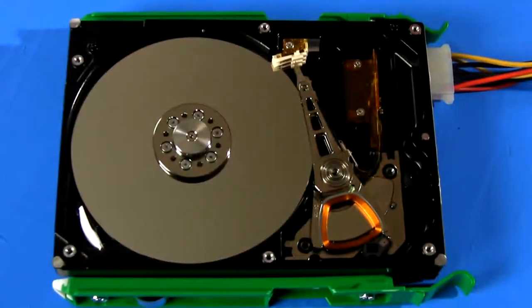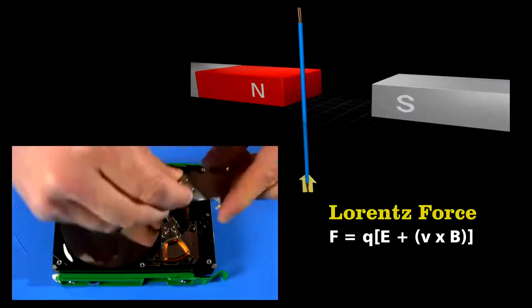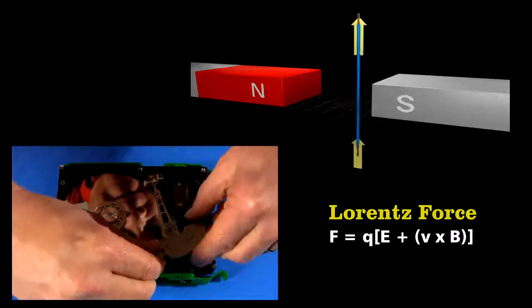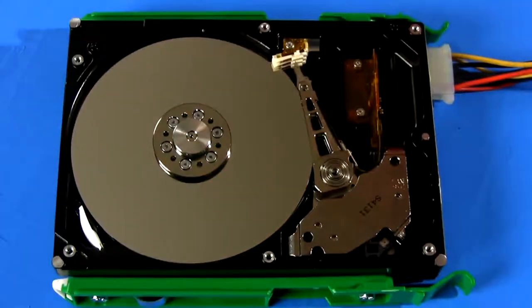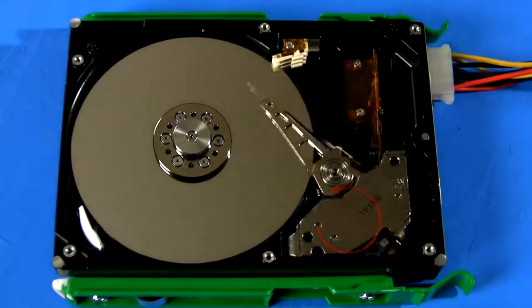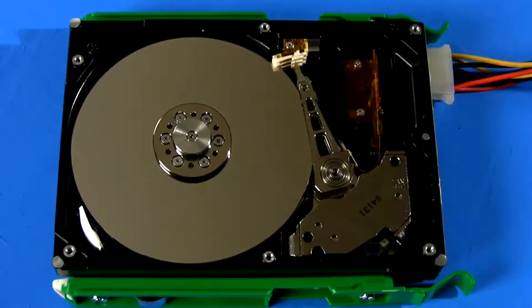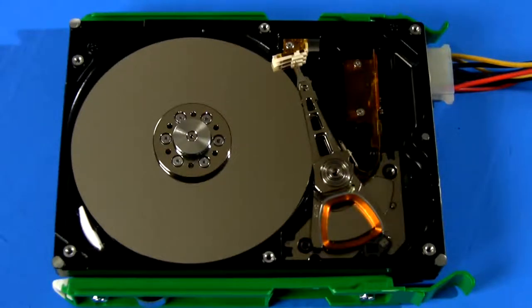The arm moves because of a Lorentz force. Pass a current through a wire that's in a magnetic field, and the wire experiences a force. Reverse the current, and the force also reverses. As current flows in one direction in the coil, the force created by the permanent magnet makes the arm move this way. Reverse the current, and it moves back. The force on the arm is directly proportional to the current through the coil, which allows the arm's position to be finely tuned.